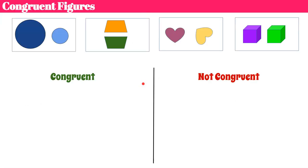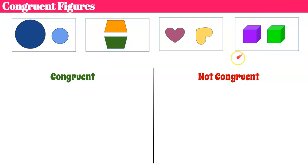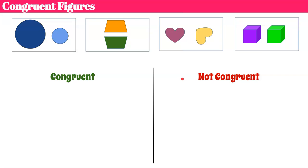Here I have four sets of figures: two circles, two trapezoids, two hearts, and two cubes. I want you to take a minute and identify which shapes you think are congruent and which shapes are not congruent. This is just a little practice before we begin the details of the lesson. Go ahead and pause, and come back when you're ready.